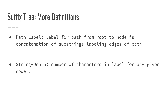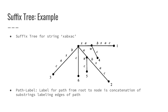The suffix tree has a few more definitions. We will talk about the path label, which is the label from the path from the root to a node — it is the concatenation of substrings labeling the edges of that path. One other thing to mention is the string depth, which is the number of characters in the label for any given node V. So from the root to a node is the concatenation of substring labels labeling edges of a path.